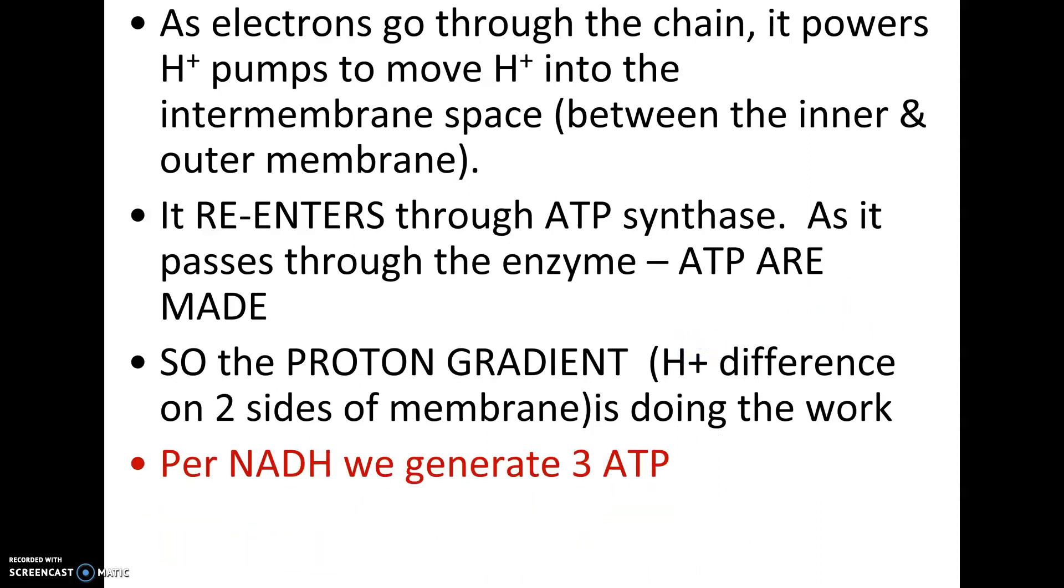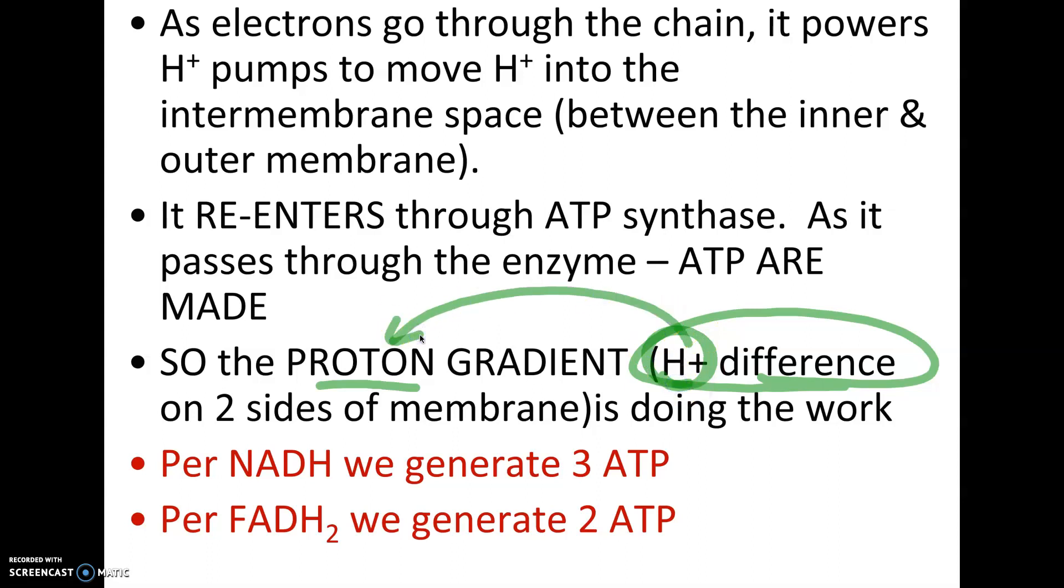And this is going to generate all those ATP. As a matter of fact, for every NADH we're going to generate 3 ATP, and for every FADH2 it's going to generate 2 ATP. You do not have to memorize those numbers. It's not important to memorize the numbers, but you do need to understand that that's where all of our ATP really come from. Almost all of them are made in this step, which is chemiosmotic phosphorylation, because you have a difference, an electrochemical gradient, a difference in hydrogen ions. Sometimes it's called a proton gradient because a hydrogen ion is a proton. So sometimes this is called a proton gradient.